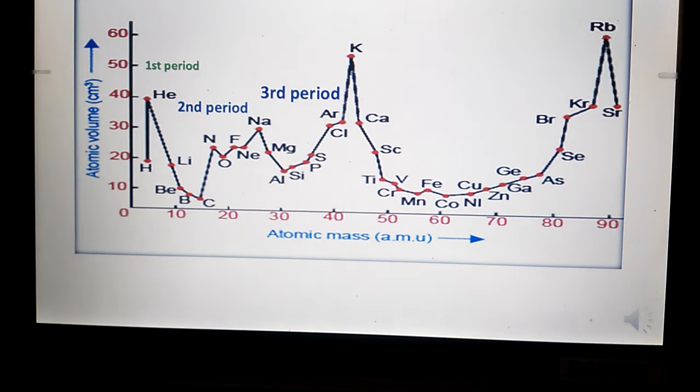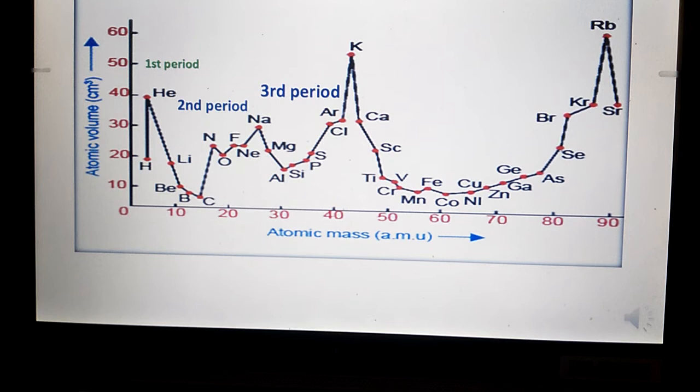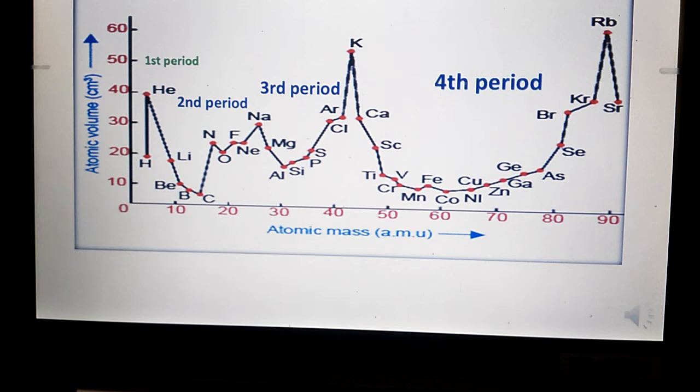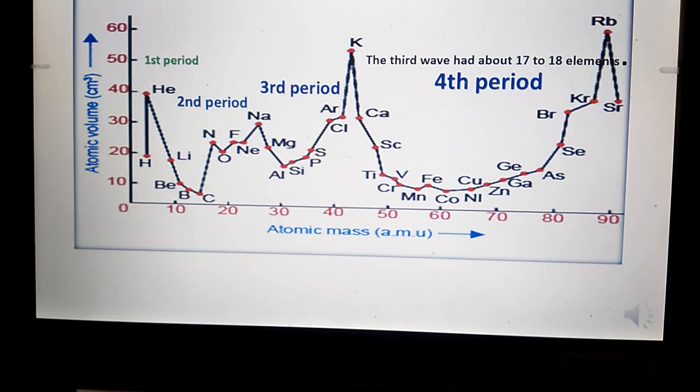The third period starts from sodium, magnesium, aluminum, silicon, phosphorus, sulfur, chlorine, and argon. The fourth period contains about 17 to 18 elements and starts from potassium to rubidium.